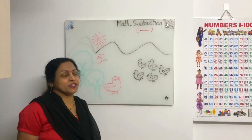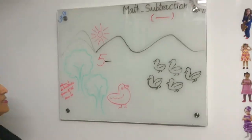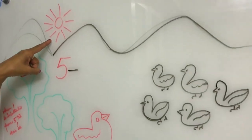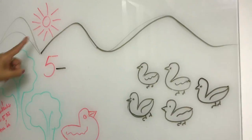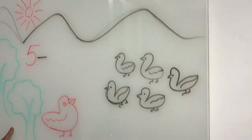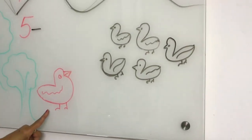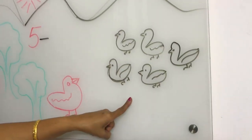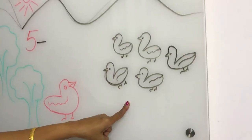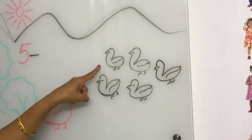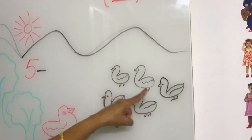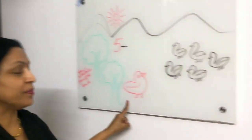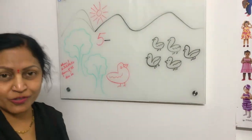Look at the board, children. A beautiful scenery is there. In this scenery, there is a sun, trees, a mother duck, and ducklings. How many ducklings are there? One, two, three, four, five ducklings are there. One mother duck is also there.